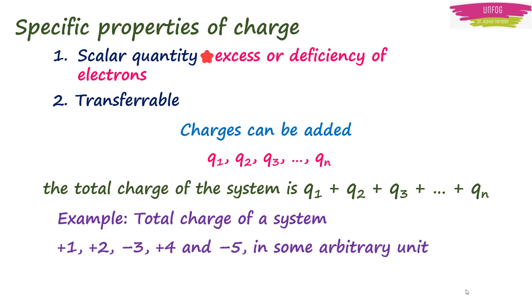For example, total charge of a system containing 5 charges, say +1, +2, -3, +4, and -5. When added, the system has charge of -1 with same unit. Note that one should use proper signs while adding the charge in the system.